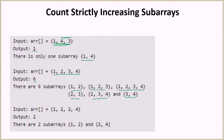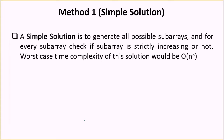Now look at the last example: [1, 2, 2, 4]. Here we have [1,2] as one increasing sub-array and [2,4] as another increasing sub-array. Because the two middle elements are the same (equal), we don't count a sub-array spanning across them.